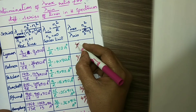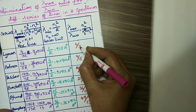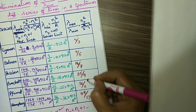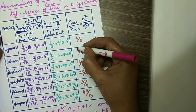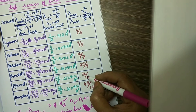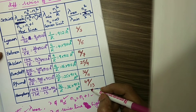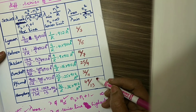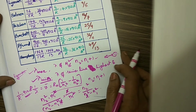You can see the pattern here: it is 4/3, where 4 is 2 squared. Then 3 squared by 5, 4 squared by 7, and so on. The denominator is increasing by 2 units each time, and the numerator is the square of the next integer. By using this pattern, you can easily remember the ratio of lambda max to lambda minimum. This will be very useful for objective questions.